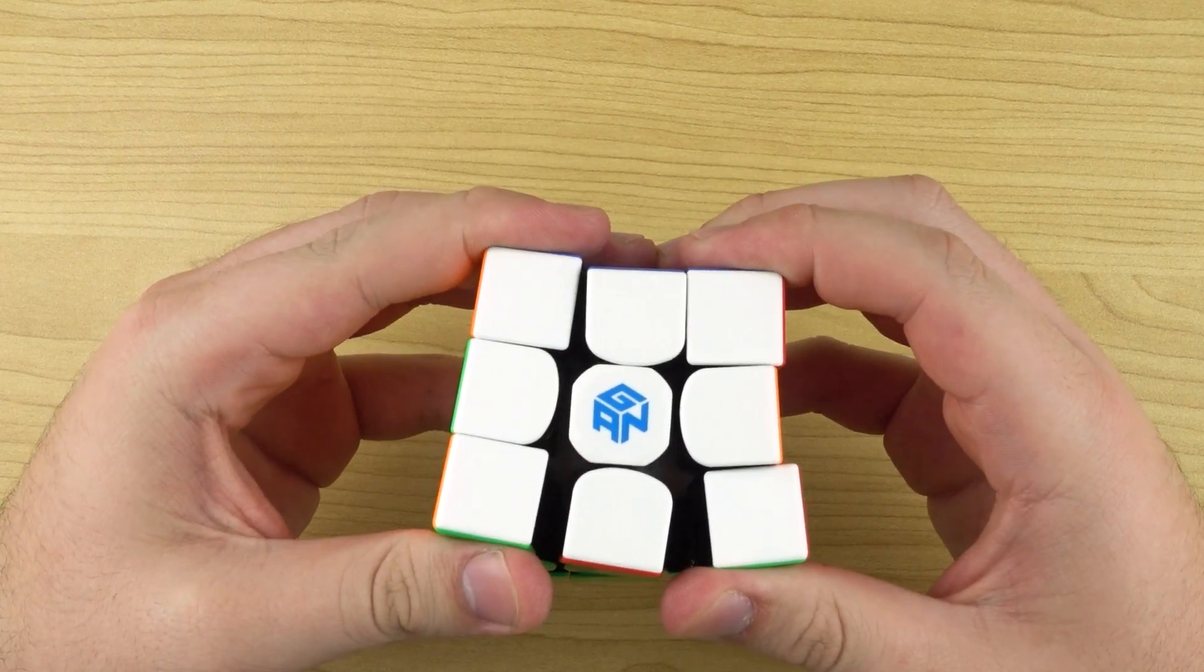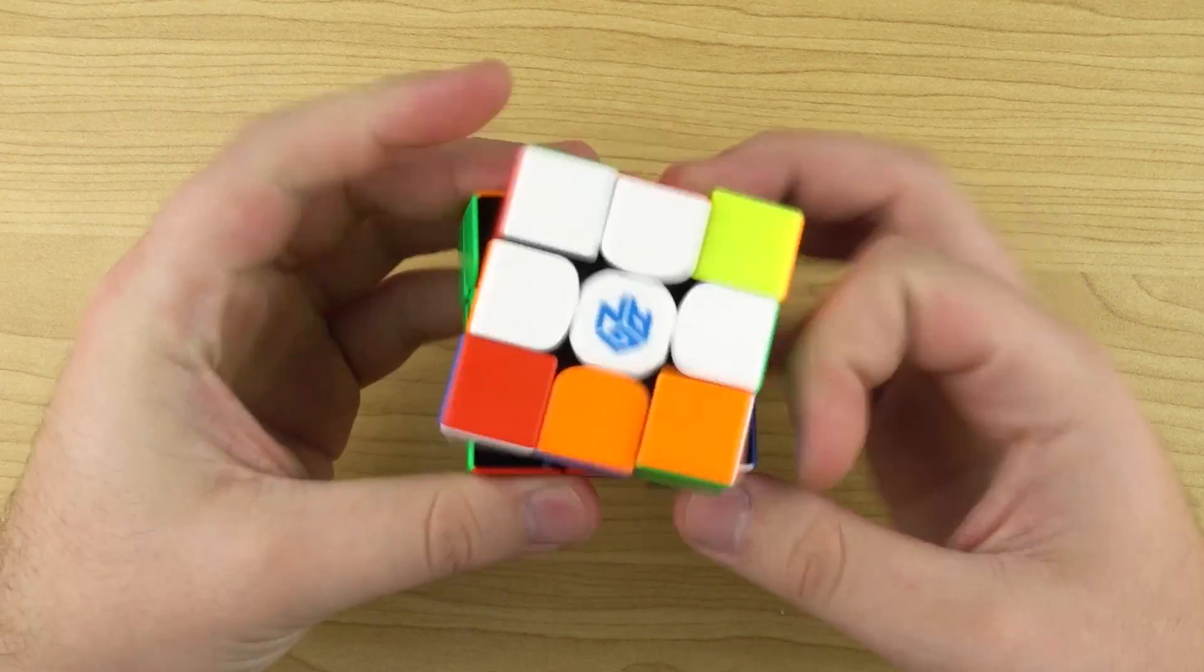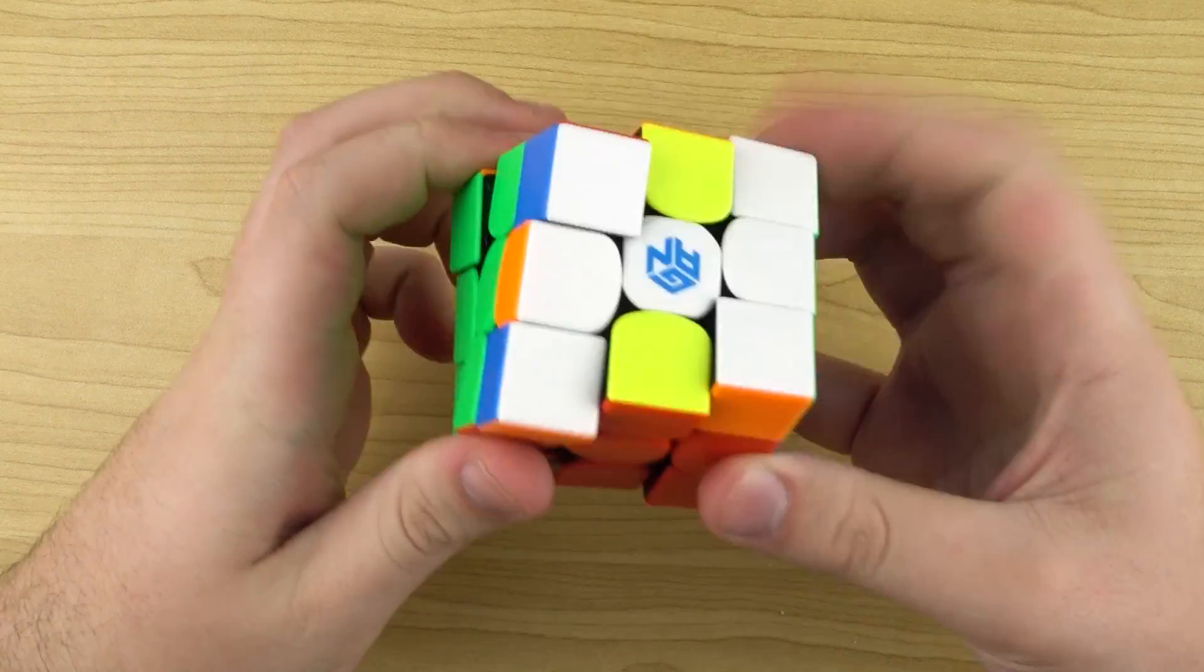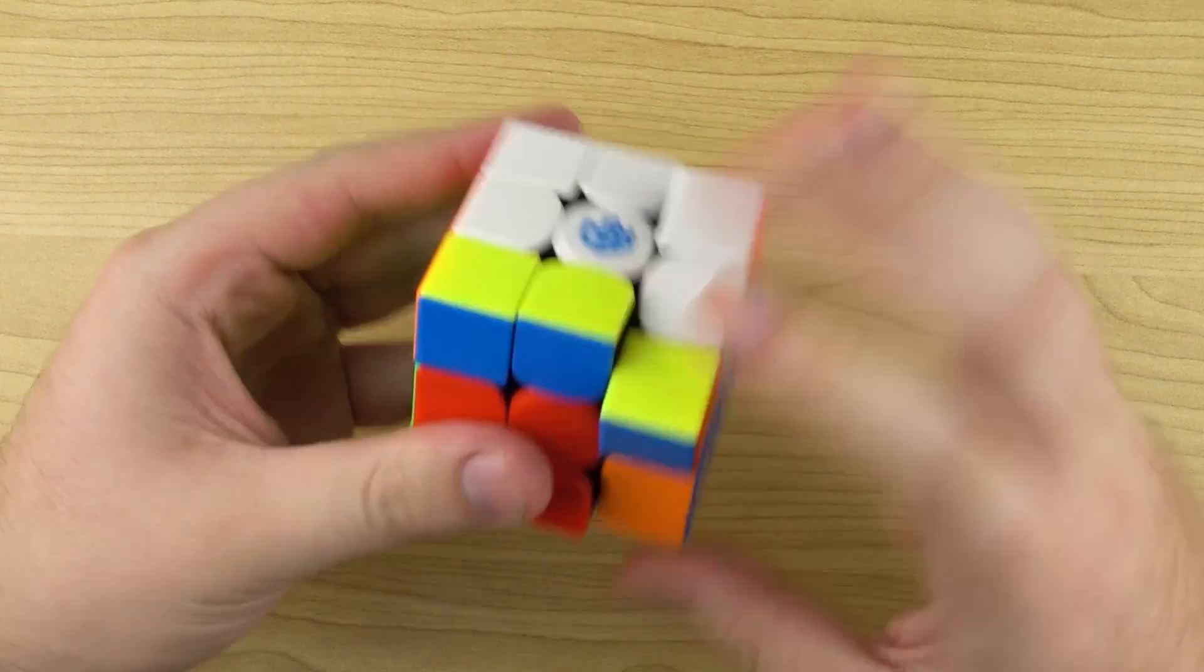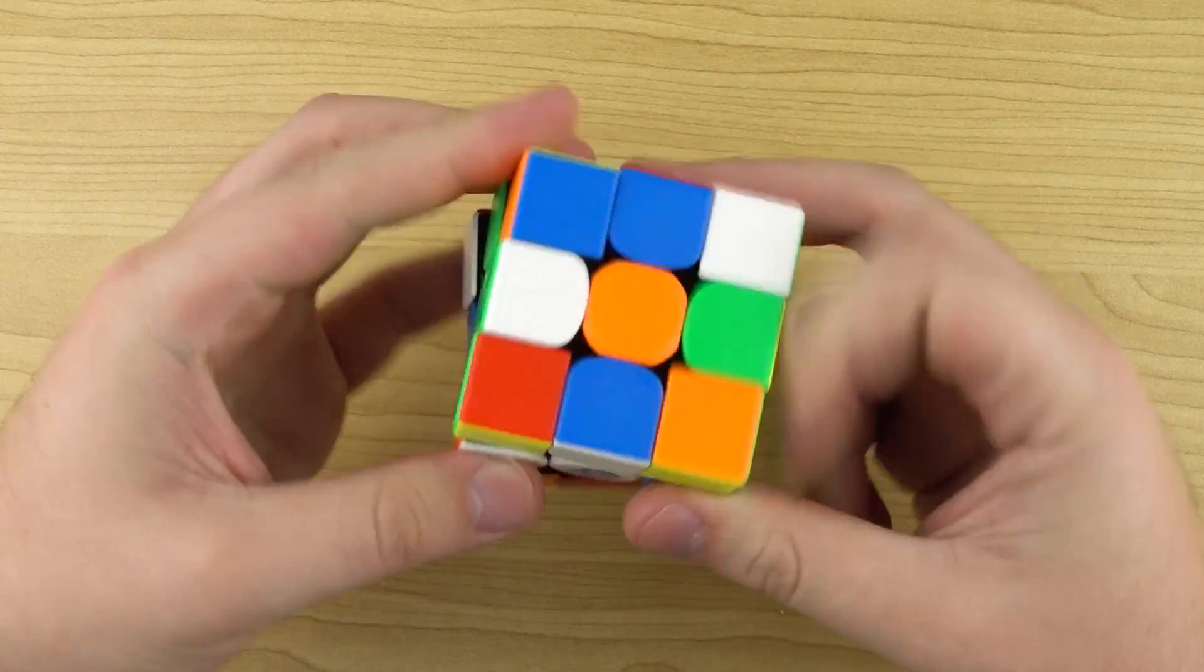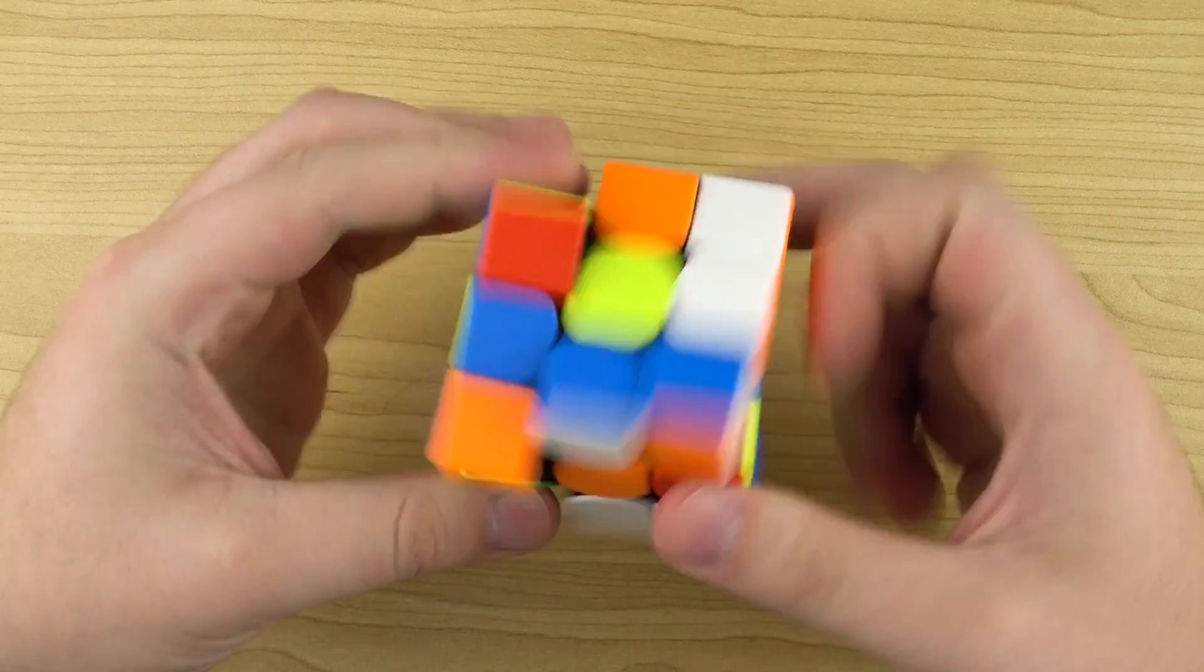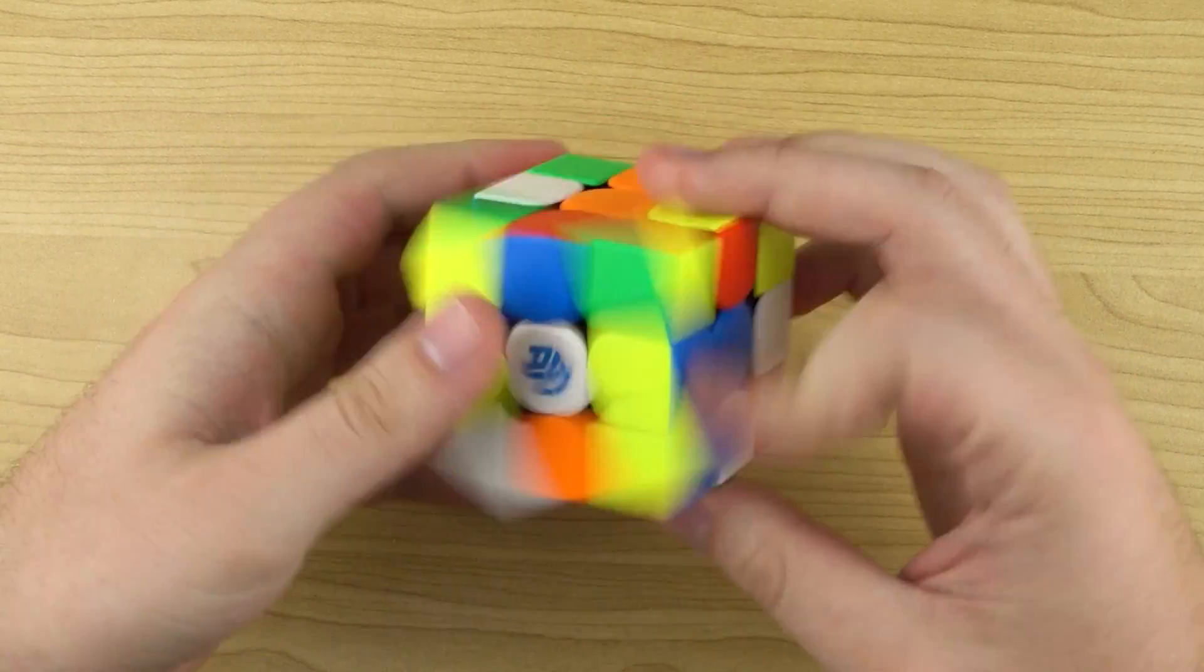The puzzle, since it is non-magnetic, does feel a little bit unstable but not experiencing any catches which is good. Let's just do a scramble. It does feel very fluent though but the speed definitely could be faster. There's no catches which is awesome.